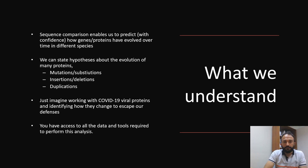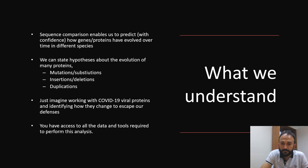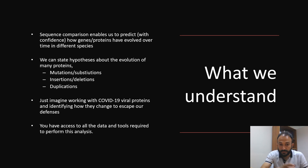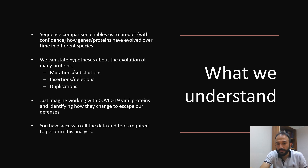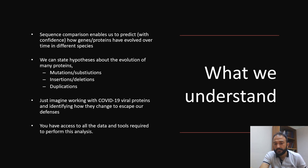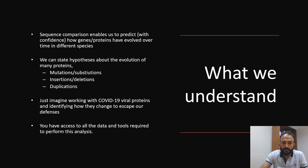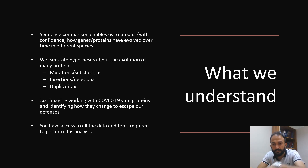So sequence comparison enables us to predict with confidence how genes and proteins have evolved over time in different species. We can also state hypotheses about the evolution of many proteins — mutations, substitutions, insertions, deletions, and duplications. Duplications mean that if a sequence is repeated again and again in one species and we compare it to other species, we can find that this site is duplicated because it is not present in other species.